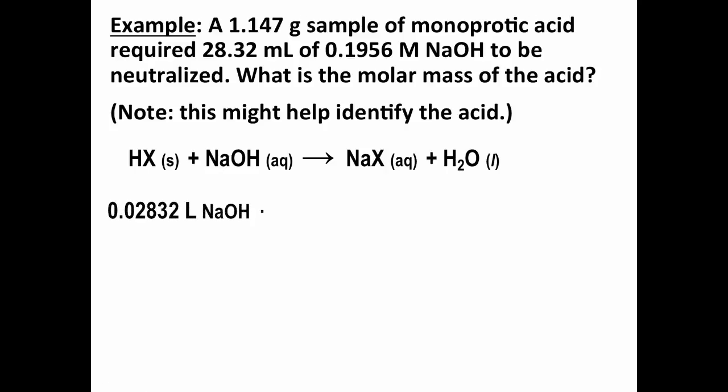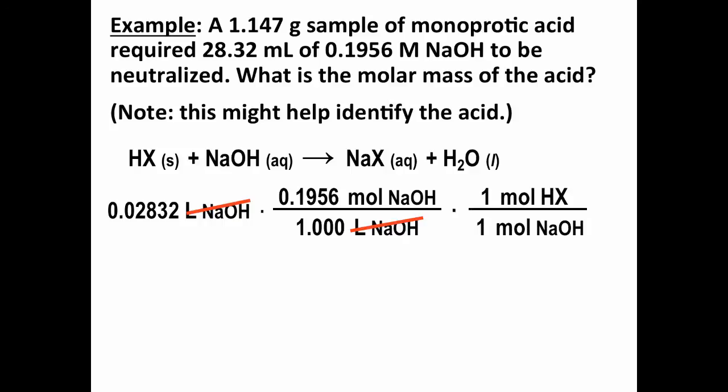So, similar to what we did before, we take the volume of sodium hydroxide, convert to liters, so 0.02832 liters of sodium hydroxide. We convert from liters to moles for the sodium hydroxide using the molarity, and then this one is one-to-one stoichiometry, so one mole of NaOH reacts with one mole of HX, and that will then give us our moles of HX in this sample of our acid.